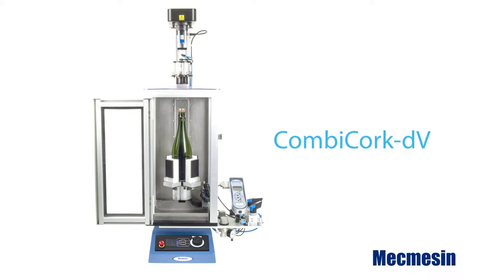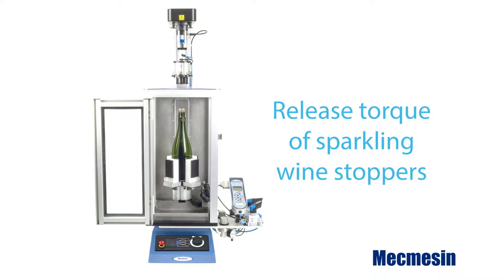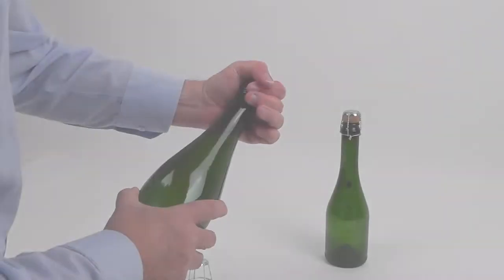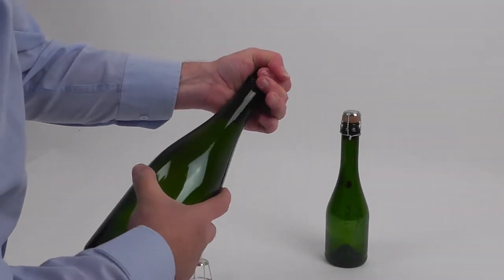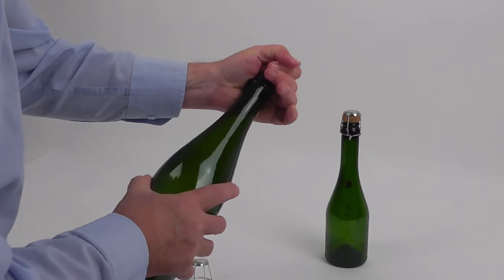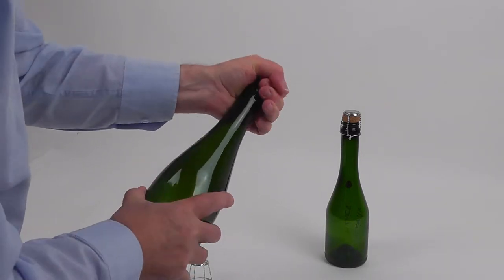The CombiCork is a dedicated tester for objectively measuring the removal torque of corks from sparkling wine bottles. The semi-automated system simulates the helical action of twisting the cork while simultaneously applying a tensile force to extract the cork.